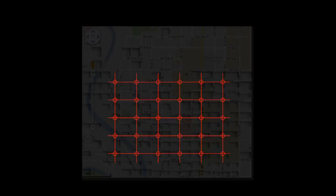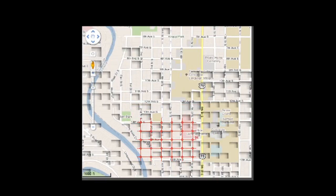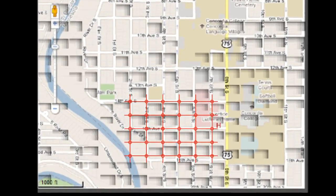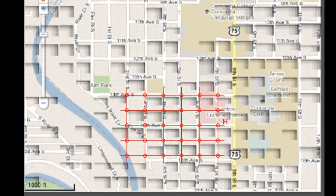Graph theory is looking at networks — you can think of them as points or vertices that are connected by lines, which we usually call edges. One example we looked at closely was thinking about the city streets of Moorhead, considering the streets to be the edges and the intersections to be the points in our network.